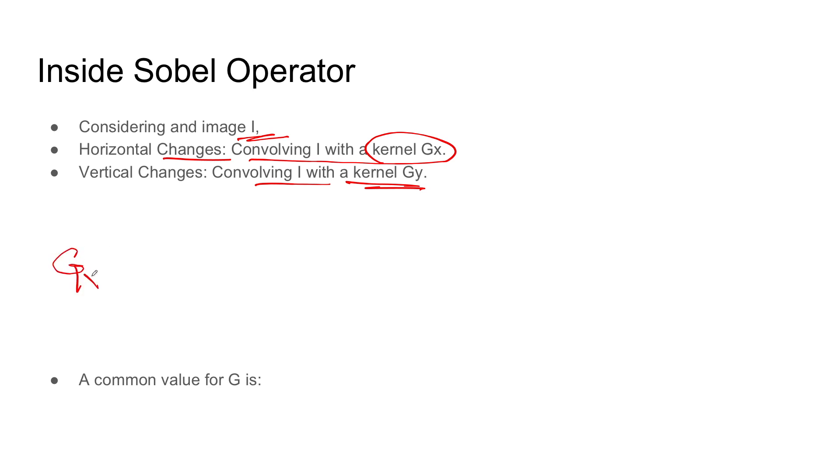Kernel GX and GY are 3 by 3 kernels which I will just draw over here. GX is equal to [-1, 0, +1; -2, 0, +2; -1, 0, +1] convolved with I.